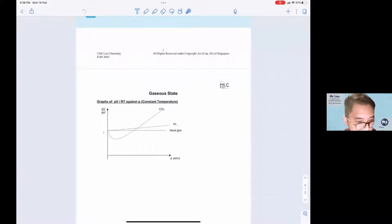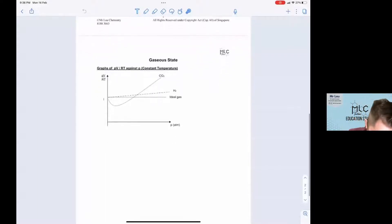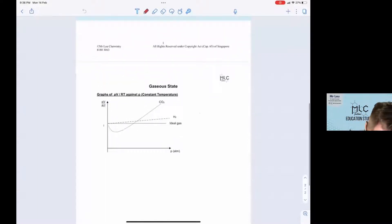Now this is another very common type of graph you'll get for a gaseous state. So what you need to do is this: PV equals nRT, we are sketching PV over RT, which is equal to n.